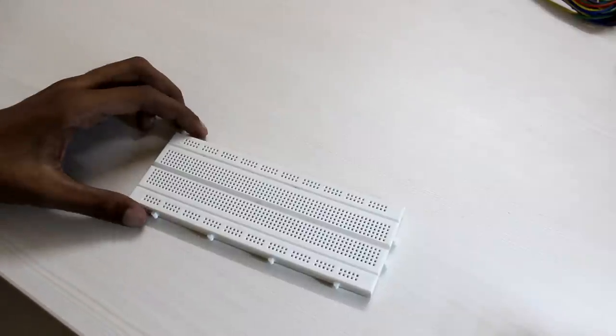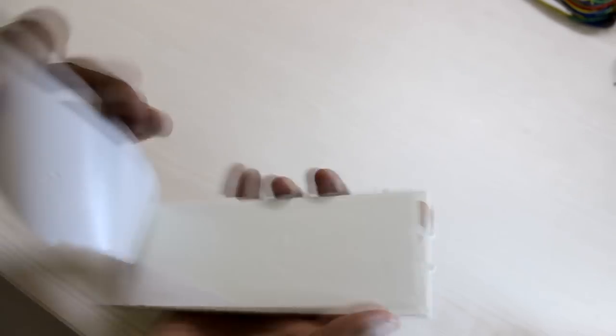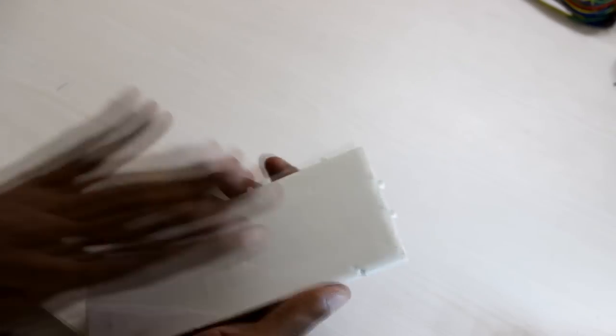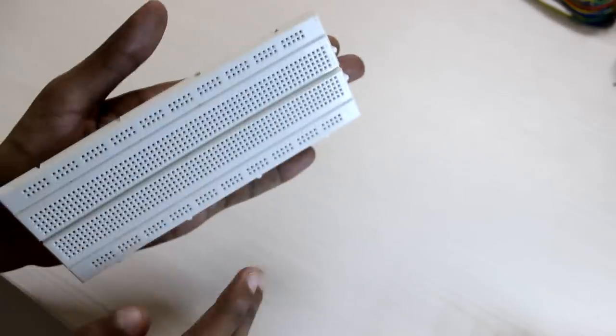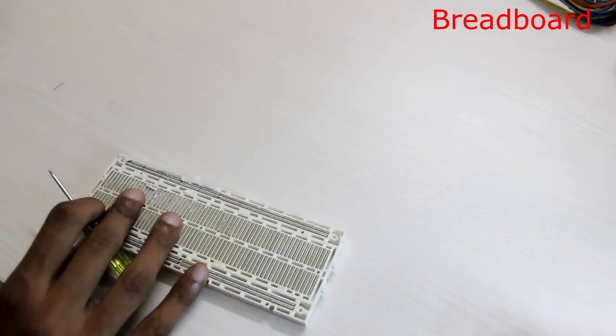This is a breadboard. The best way to learn about electronics is to tear it apart. Let us tear the breadboard now. This is the top layer. This seems to be sticky and I think I can plug it onto the wall. Let us look into it further. Let me remove this sticky layer. Wow.